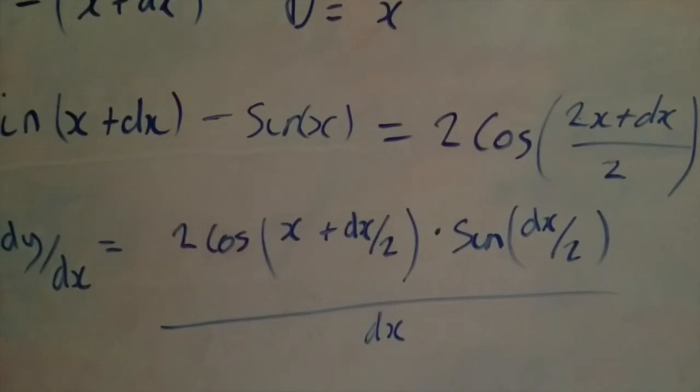Of course, bearing in mind with the limit of dx tending to 0, we'll look at each part of the expression differently. We'll look at 2 cos x plus dx over 2 and separately 2 sine dx over 2 as dx tends to 0. If I rub this out and I'll express what each part of the formula demonstrates.